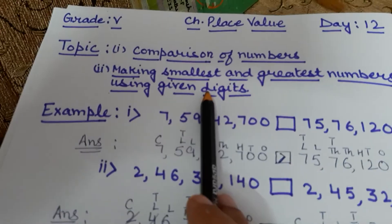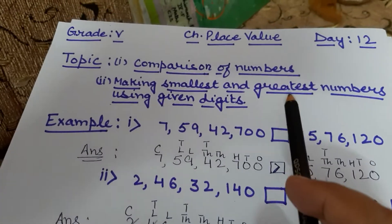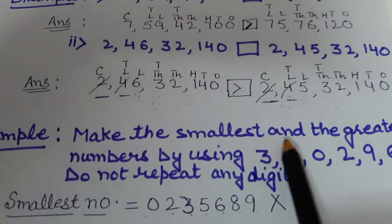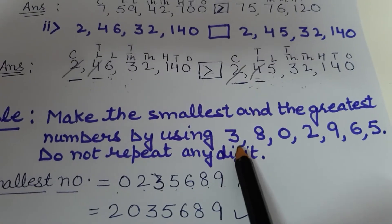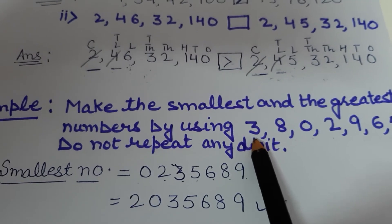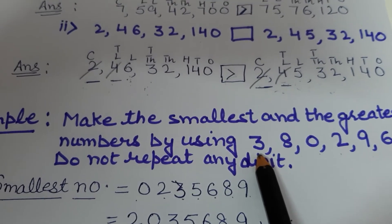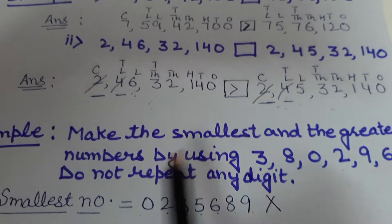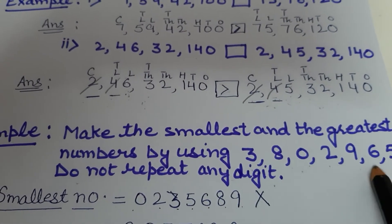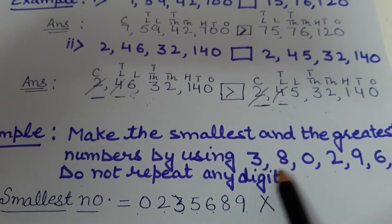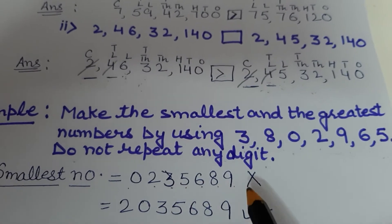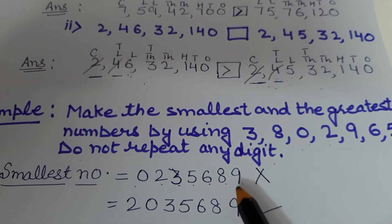Now the next example is based on the second topic: making the smallest and greatest numbers using given digits. So here I am taking the digits 3, 8, 0, 2, 9, 6, 5 — these are 7 digits. We have to make the smallest and greatest numbers using them. The condition is do not repeat any digit, so we cannot repeat any of these digits while making the number.